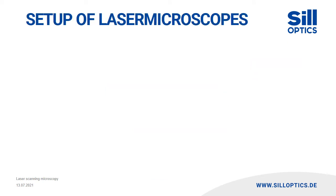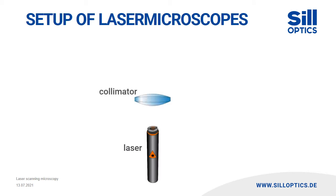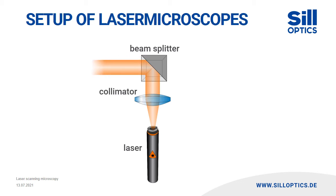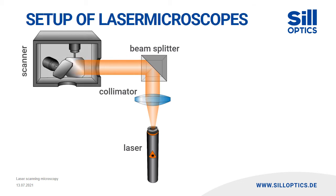A laser scanning microscope includes an excitation laser whose beams are collimated with a collimation lens in the beginning. They pass through a beam splitter or partially transparent mirror, which reflects or transmits depending on the wavelength. The following scanner allows the beam to reach various positions at the focal plane.